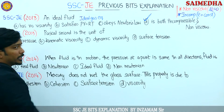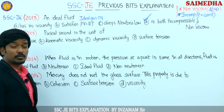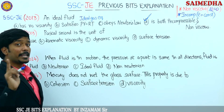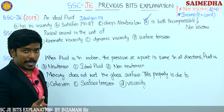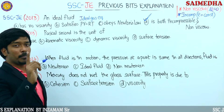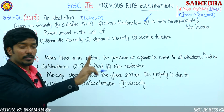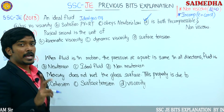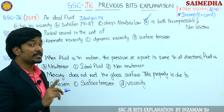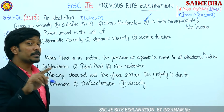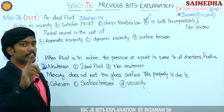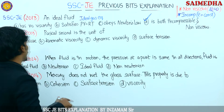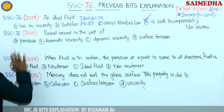SSC JE 2013 question. An ideal fluid has two points: no viscosity, that is zero viscosity, and second point it is incompressible - density remaining constant. These are the key properties.